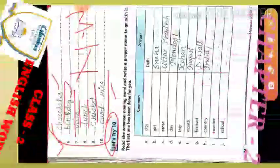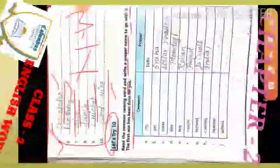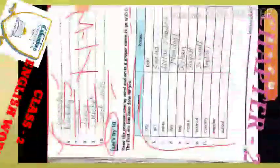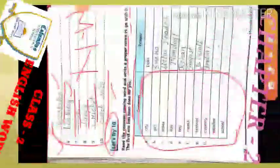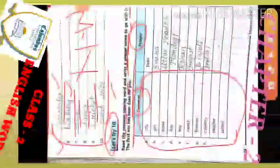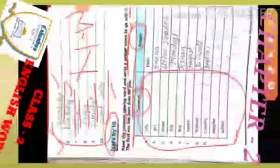Now it's time to move to Exercise 10. Read the common naming word and write a proper name to go with it — the first one has been done for you. There are some words given in common noun form. You have to read those common naming words and write their proper names. For the common nouns given, you have to write a related proper noun word.